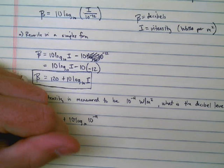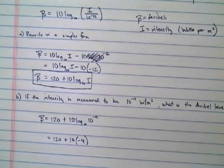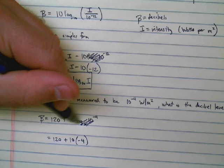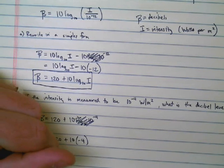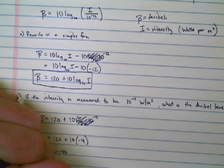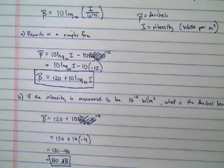That becomes a lot simpler. That's 120 plus 10 times... that's just a negative 4th. All of this stuff, I can basically drop. And so I have 120 minus 40. That would be an 80 decibel sound.